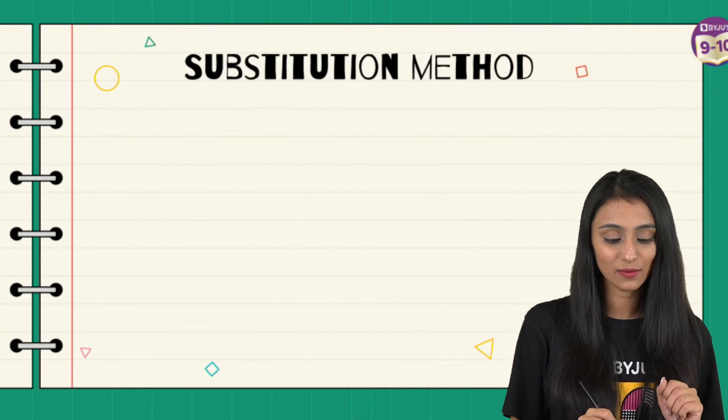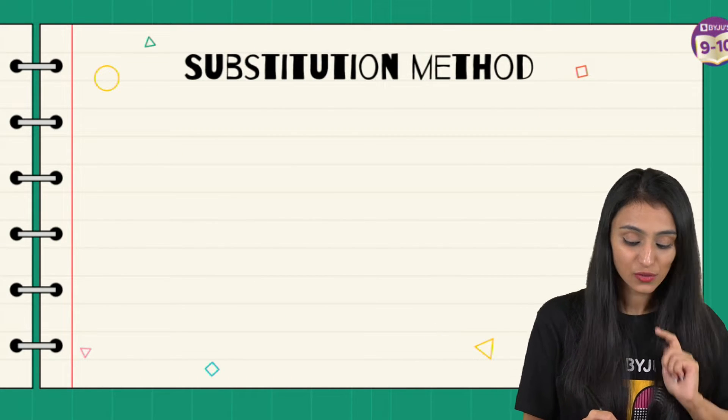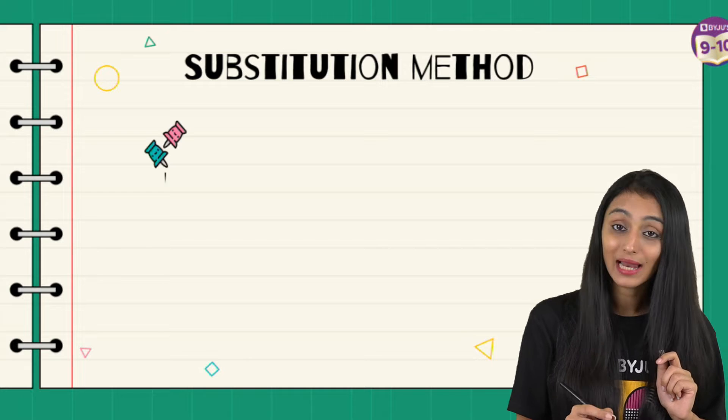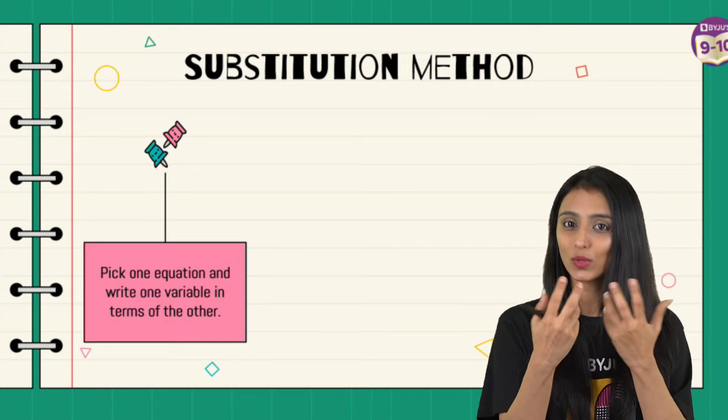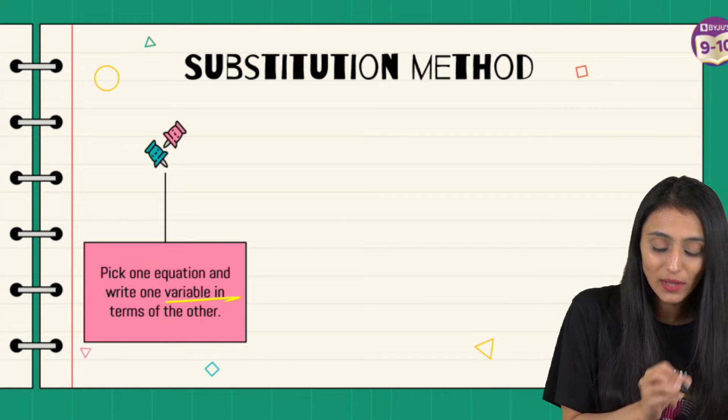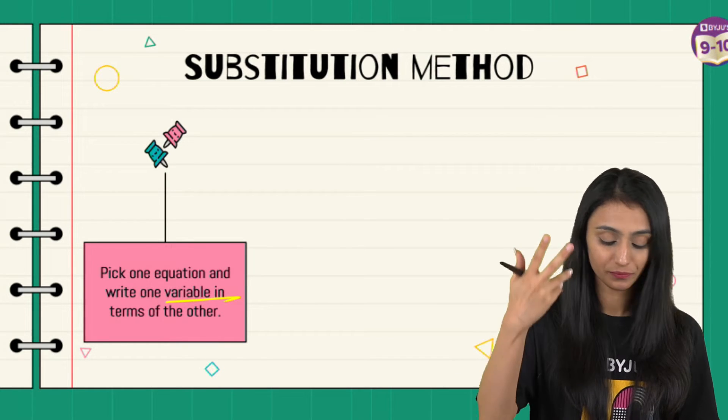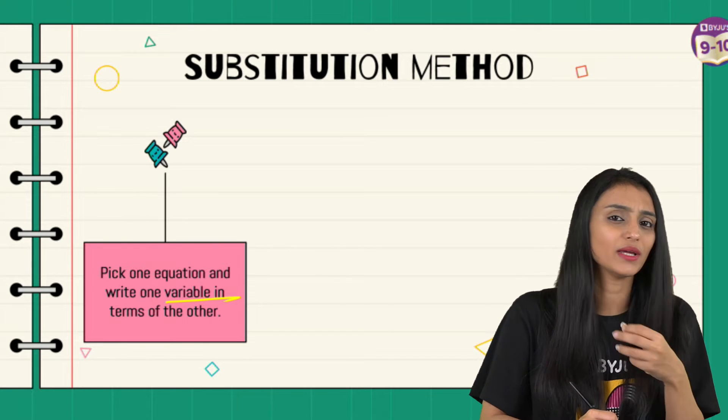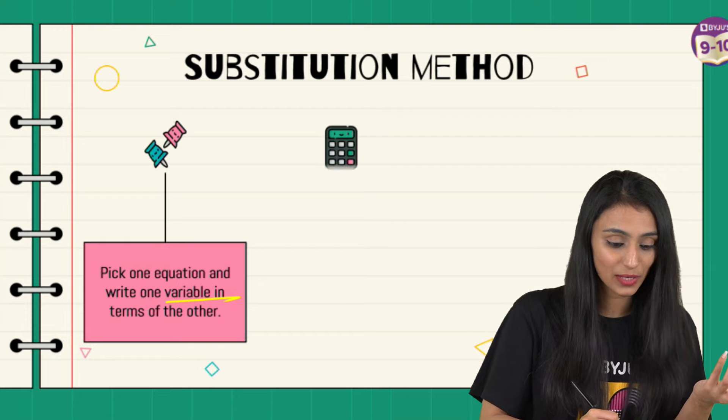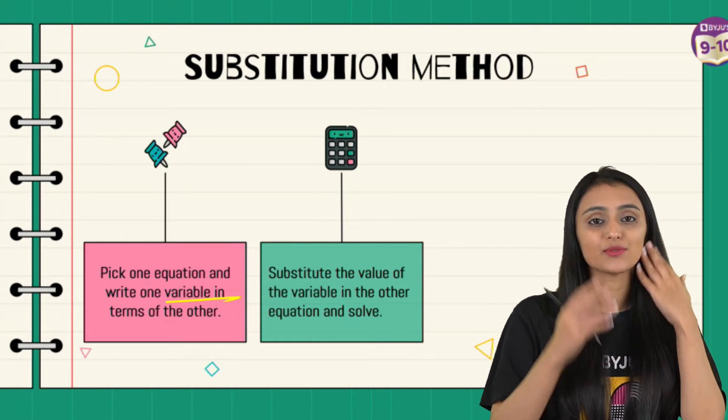In the algebraic method, we have two methods: substitution method and elimination method. Today I'm discussing the substitution method. First, let's understand how to apply this method. When you have to apply this method at any question, you will be given two equations. Pick up any of the equations, whichever looks simpler, and write one variable in terms of the other - let's say x in terms of y, or y in terms of x.